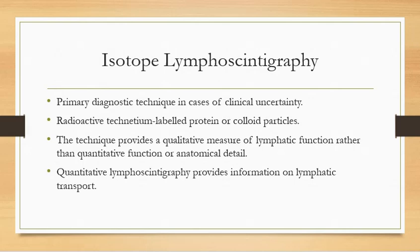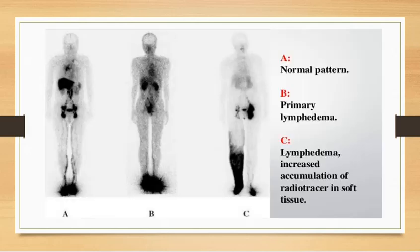Quantitative lymphoscintigraphy provides information on lymphatic transport. Images show the normal pattern (picture A), primary lymphedema (picture B), and in picture C — primary lymphedema with increased accumulation of radioactive tracer in the soft tissue.